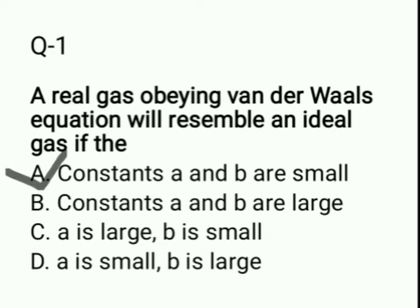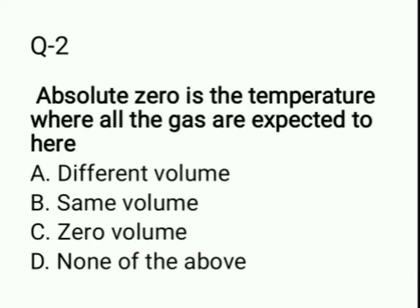Question 2: Absolute zero is the temperature where all gases are expected to have — option A: different volume; option B: same volume; option C: zero volume; option D: none of the above. The correct answer is option C: zero volume.